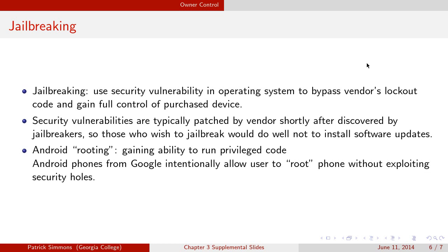Apple has software designed to stop software that Apple hasn't approved from running. But if you take advantage of a mistake that Apple made in its code, you can bypass that and run stuff Apple hasn't approved. These security vulnerabilities are typically patched by the vendor shortly after they're discovered. So if you do want to jailbreak your phone, you should be very careful about installing software updates.